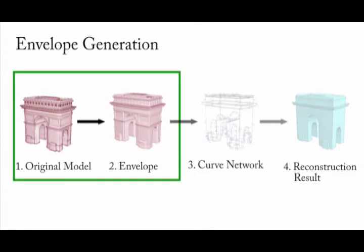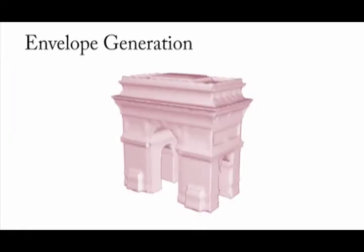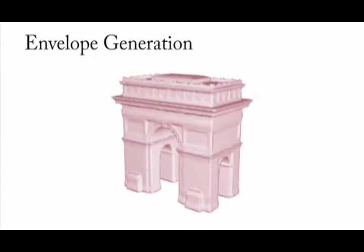The goal of the envelope generation is to approximate poor inputs, including polygon soups, with a closed manifold. An initial envelope generated using a voxel hull of the input is iteratively deformed to fit the input model, thus producing the envelope surface.